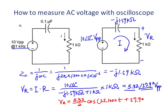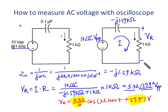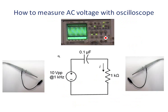To measure the AC voltage, we need to know the voltage amplitude and also the phase angle. The frequency should be the same as the power supply, which we already know is 1 kHz. So let's try to measure the magnitude and phase angle separately.